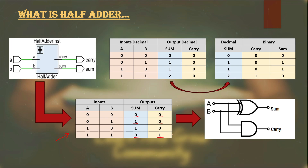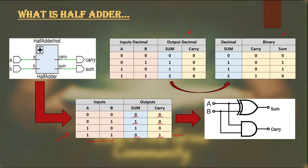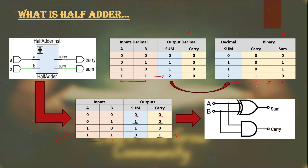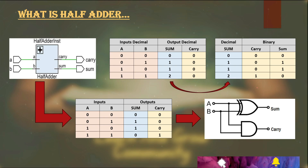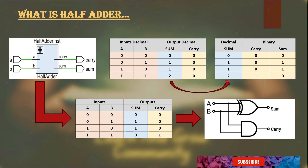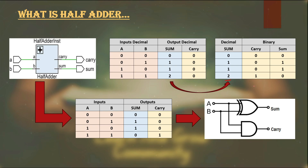When both inputs are one, sum will be zero and carry will be one. If you are surprised by the last output, refer to decimal addition: decimal one plus decimal one is two, and when you convert the decimal number two into binary you get one-zero, so zero is your sum and one is your carry — same as decimal addition where five plus five gives ten, zero being the sum and one carried forward. For binary, zero repeats after one, unlike decimal where zero repeats after nine.